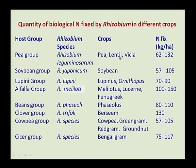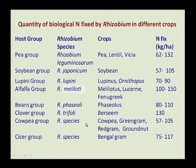Among different bio-fertilizers, Rhizobium is an important one, and the species of Rhizobium differs from crop to crop. For the pea group, Rhizobium leguminosarum is used; for soybean group, Rhizobium japonicum; for lupine group, Rhizobium lupini; for lucerne group, Rhizobium meliloti; for bean group, Rhizobium phaseoli; for clover group, Rhizobium trifolii; for cowpea group and Bengal gram, different Rhizobium species are used.